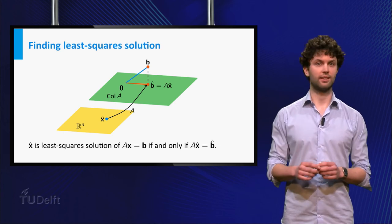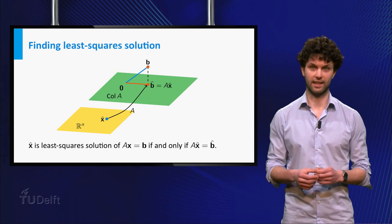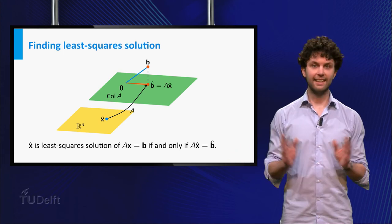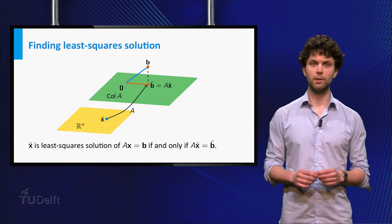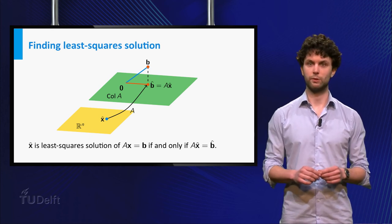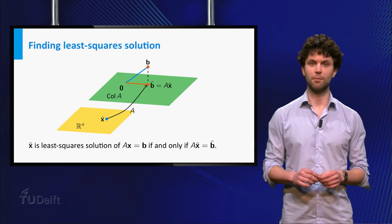Also note that if the original system A times x is b is consistent, then any least-square solution is in fact an exact solution, because in that case the distance between A times x and b can be zero.